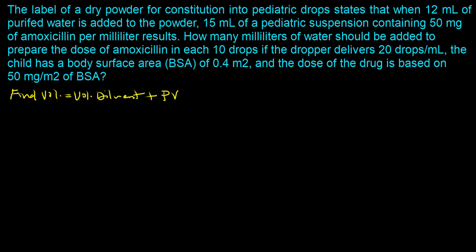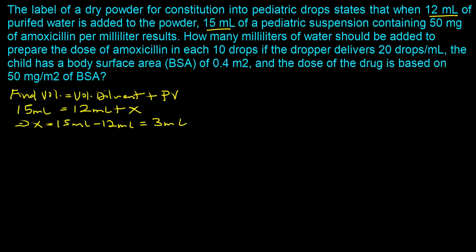The key thing about dry powder is that no matter what volume of diluent you use, the powder volume — the contribution the powder makes to the total volume — stays the same. Using the label directions: you add 12 milliliters of diluent and end up with a final volume of 15 milliliters. So: 15 = 12 + x, which gives x = 3 milliliters. The powder volume is 3 milliliters.